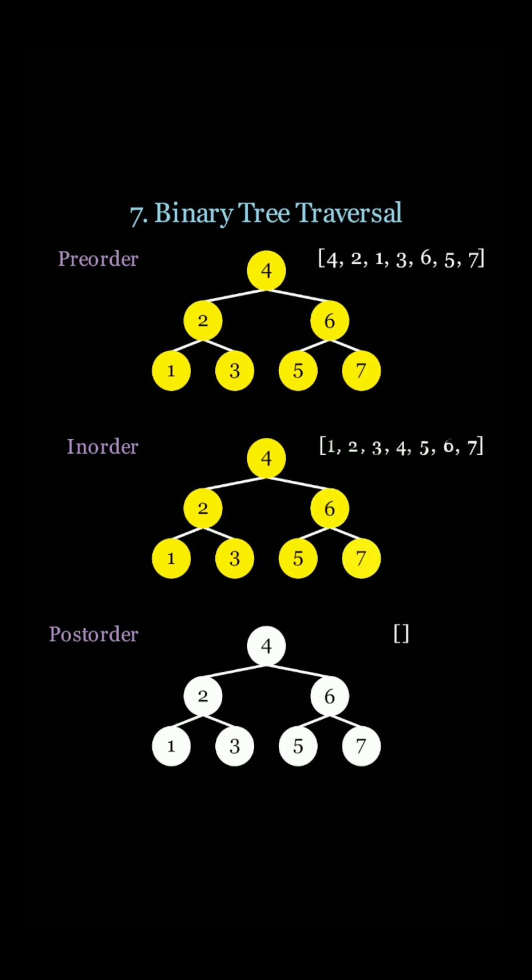For the post-order traversal, we explore all the children before the current node. So that's going to be 1, 3, 2, 5, 7, 6, and finally 4.